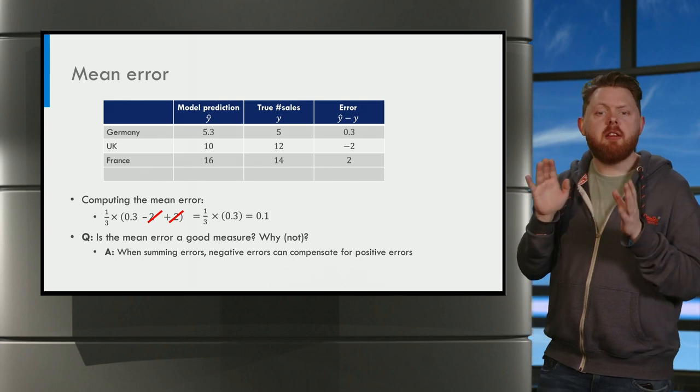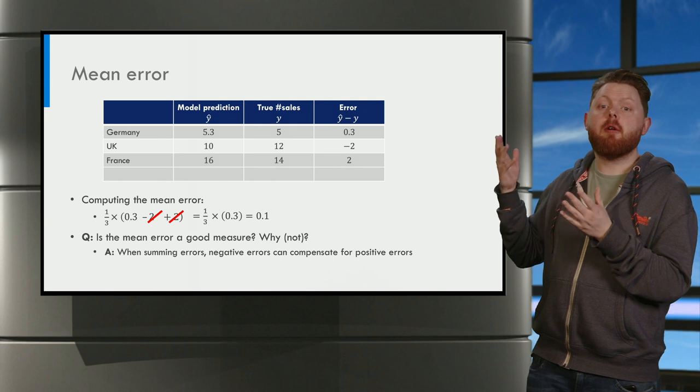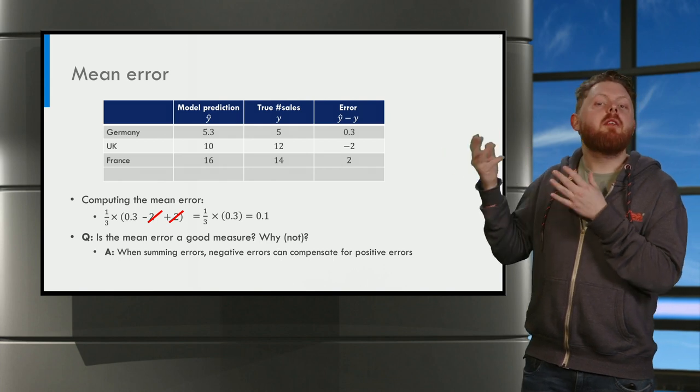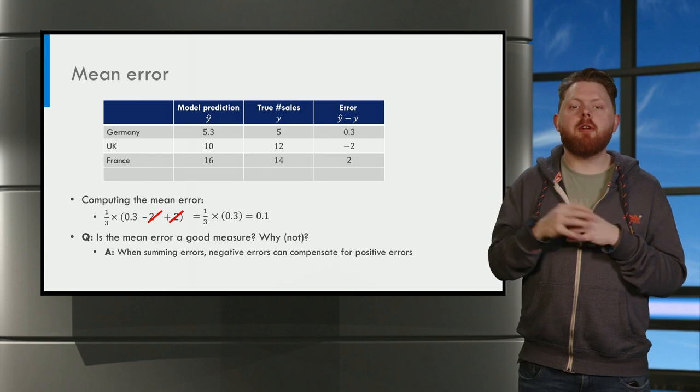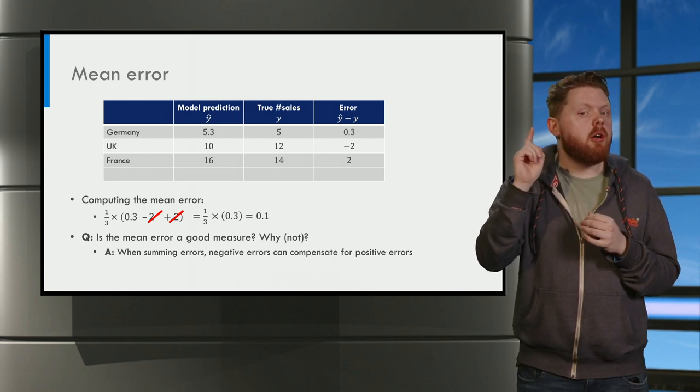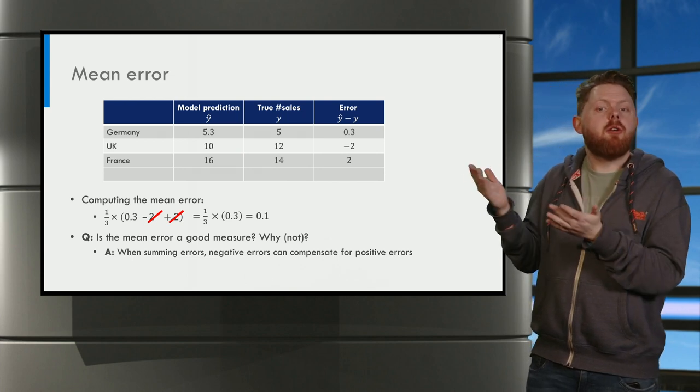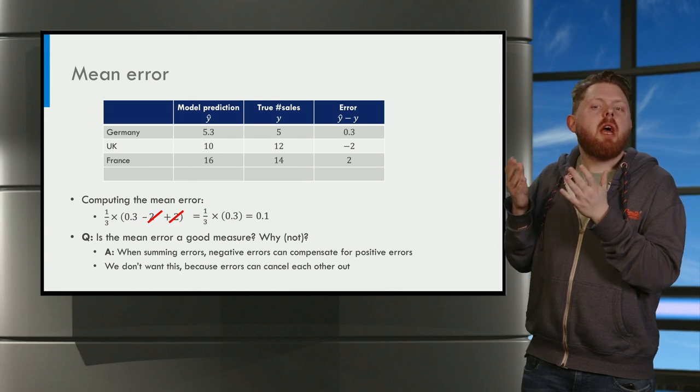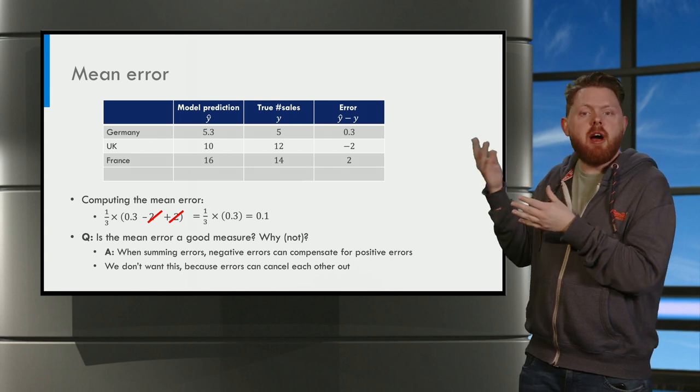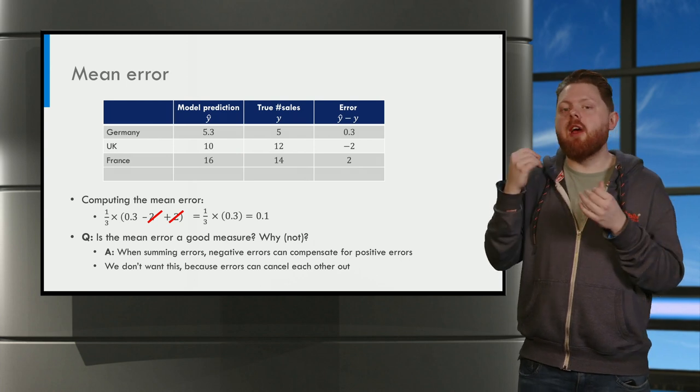Okay, let us discuss the answer. When we are summing the errors in this way, we can see that negative errors can compensate for positive errors. We don't want this because now the errors can cancel each other out. For this reason, the mean error of 0.1 that we find is much smaller than a typical error, for example 2.